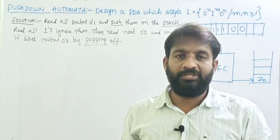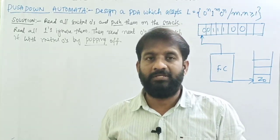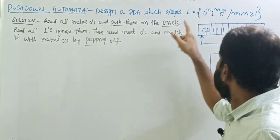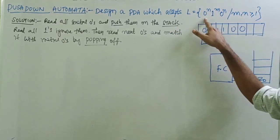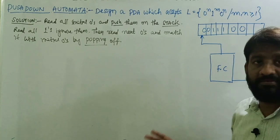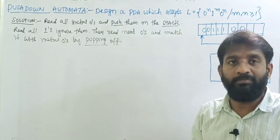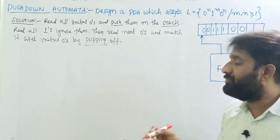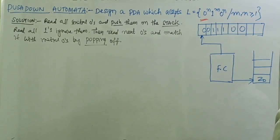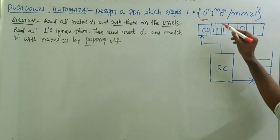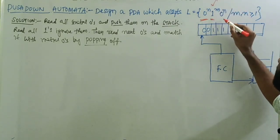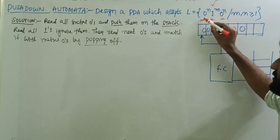Welcome back. Today's topic is: design a pushdown automata for the language L = 0^n 1^m 0^n. First, identify what is the logic behind this problem. Observe that there are some zeros followed by ones, then followed by an equal number of zeros.